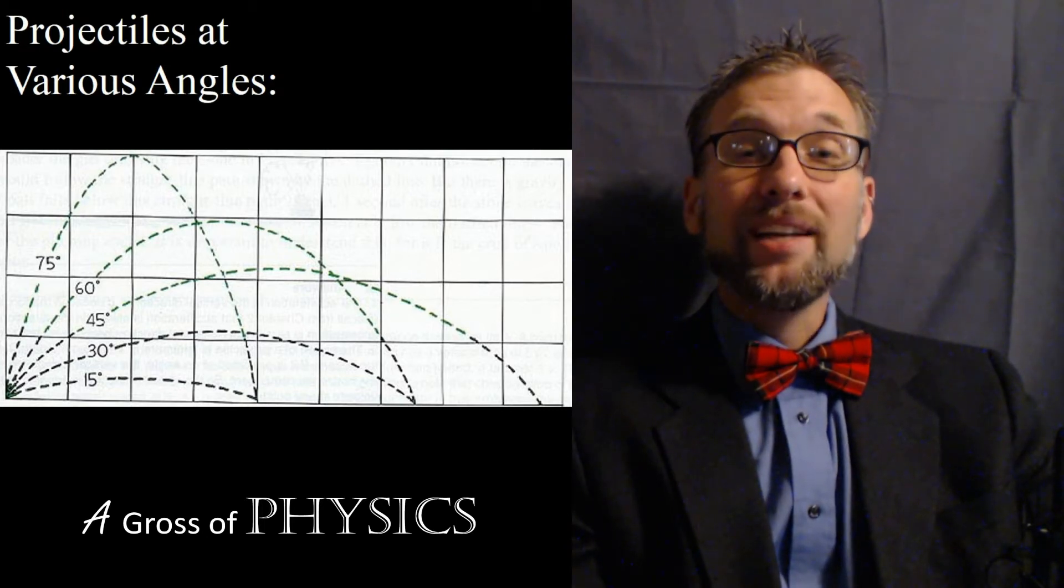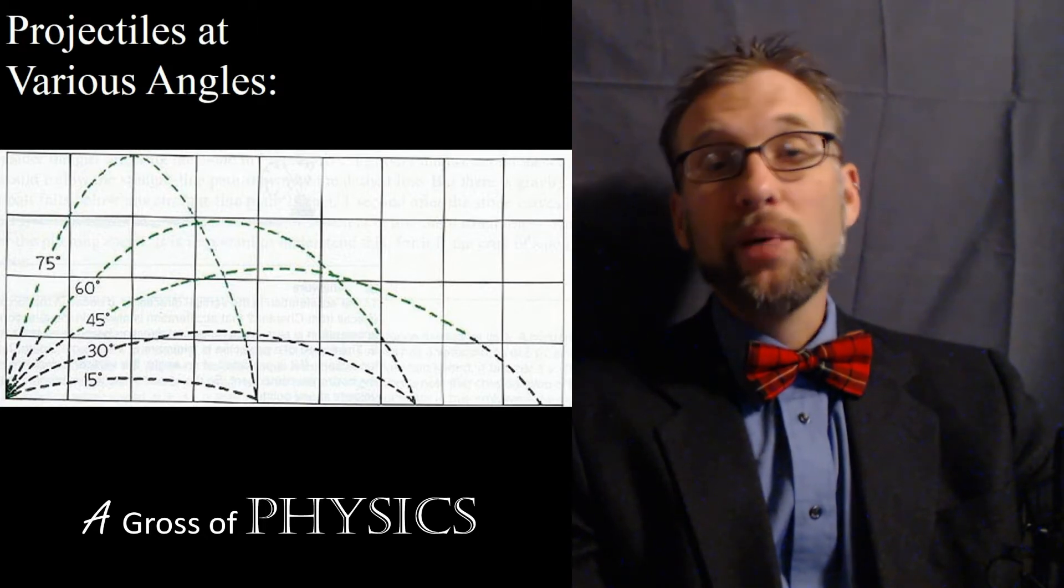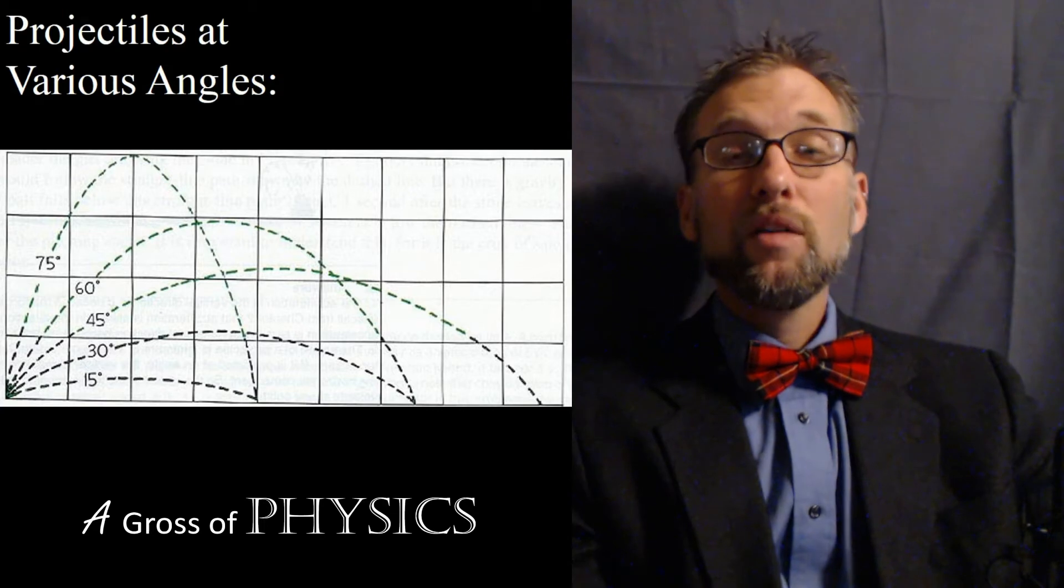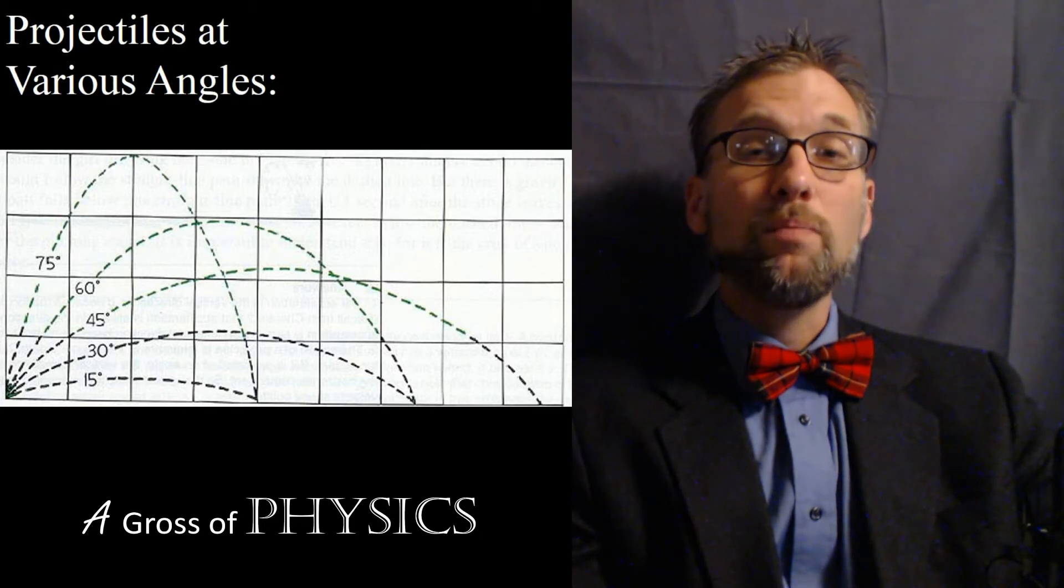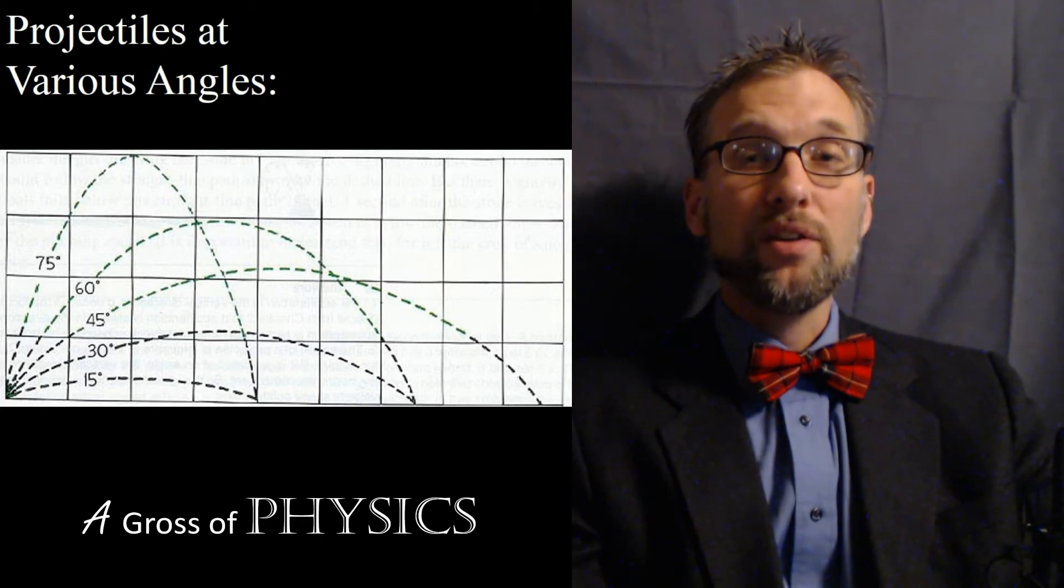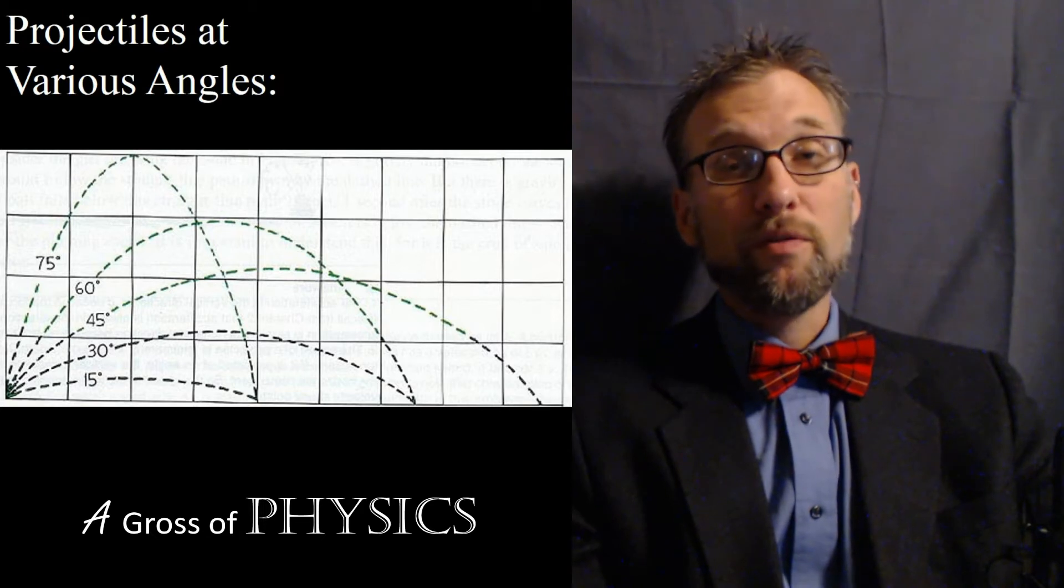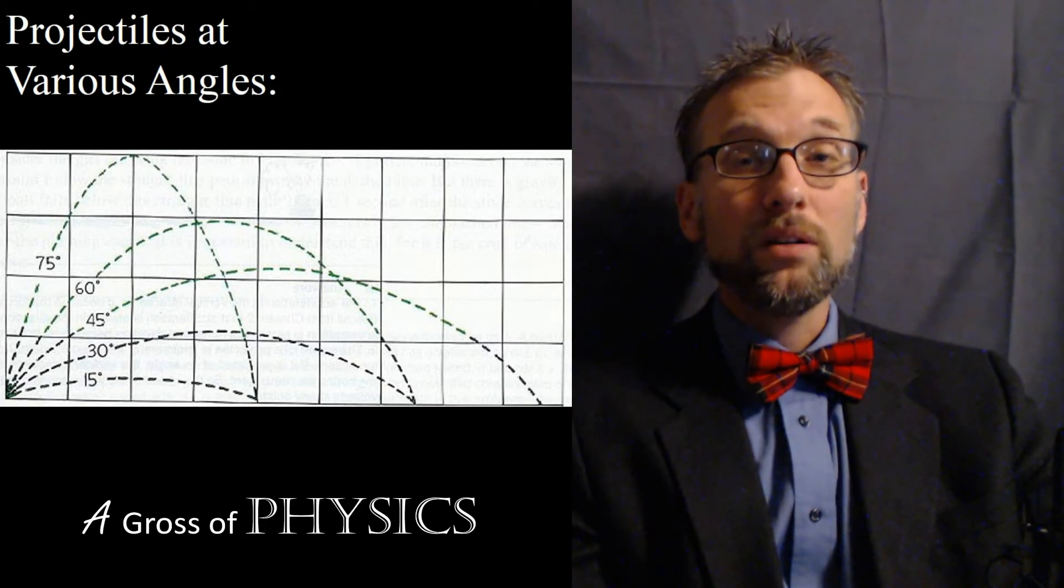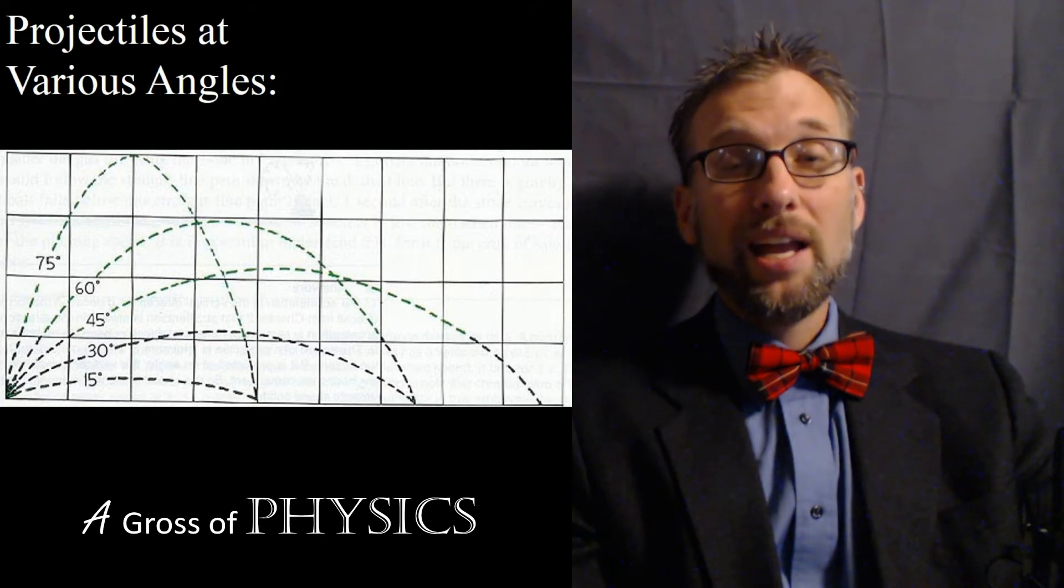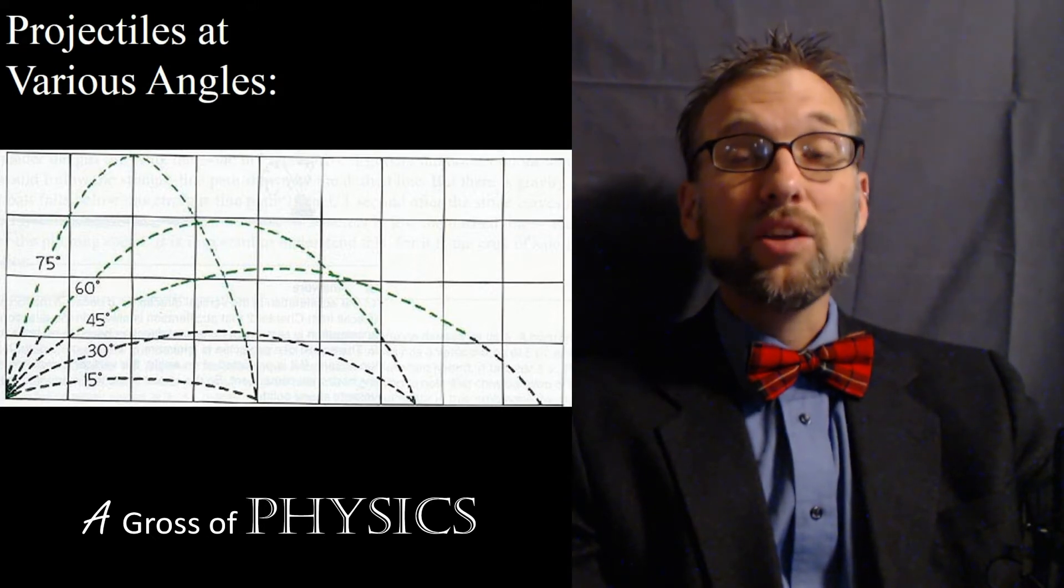Now remember, we are neglecting wind resistance. So in a perfect world where we could evacuate all the air in the system, 45 gives us the biggest range. Now there's a reason for that mathematically, and that's the fact that sine and cosine are as big as they can be at 45 degrees. You'll also remember from math class that 45 degrees sine and cosine are equal. 45 degree angle gets you legs that are equivalent.